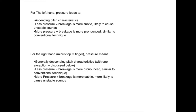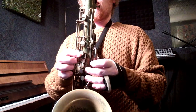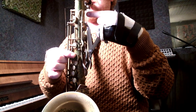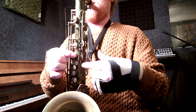For the left, pressure leads to ascending pitch characteristics. Less pressure means the breakage is more subtle and is likely to cause unstable sounds; more pressure means the breakage is more pronounced and is similar to conventional technique. For the right hand, more pressure means the breakage is more pronounced, and more pressure means the breakage is more subtle and is likely to cause unstable sounds. There is one exception to this: the high G key actually bridges across from the left to the right. This key not only depresses a key onto the saxophone but also lifts by mechanism the left palm F key. As such, depending on how preparation or indeed any part of the enacting process might be progressing, it is also sometimes possible for actions of one hand to link into the activity of the other.